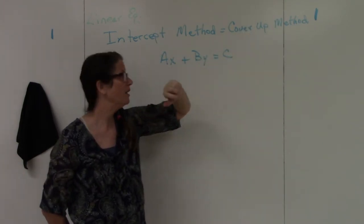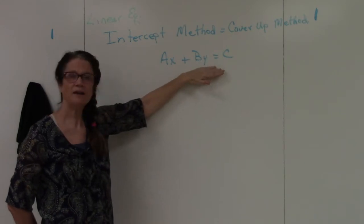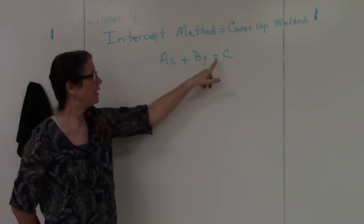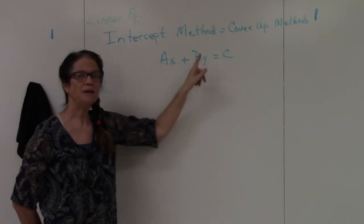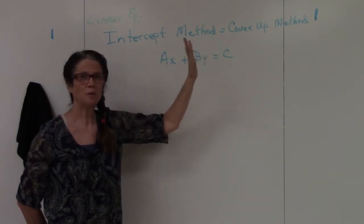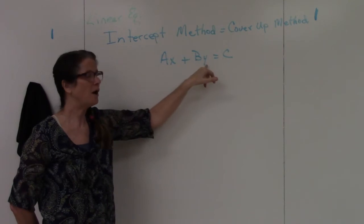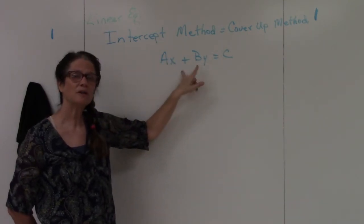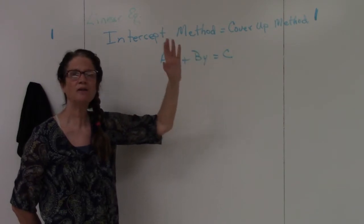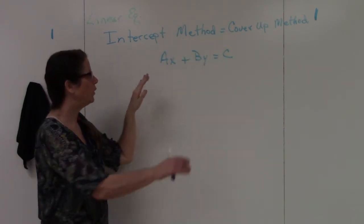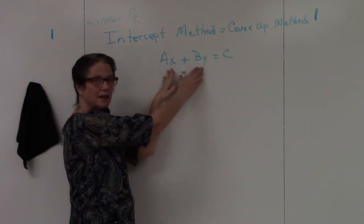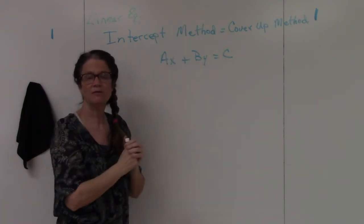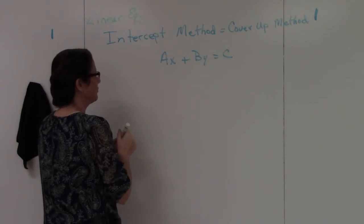The standard format of a linear equation is ax plus by equals c. The a, b, and c just represent numbers; the x and y are both to the first power — that's how you know it's a linear equation. When your x and y are on the same side of the equal sign, you're in standard form and you can use the cover-up method. Let me give you an example.